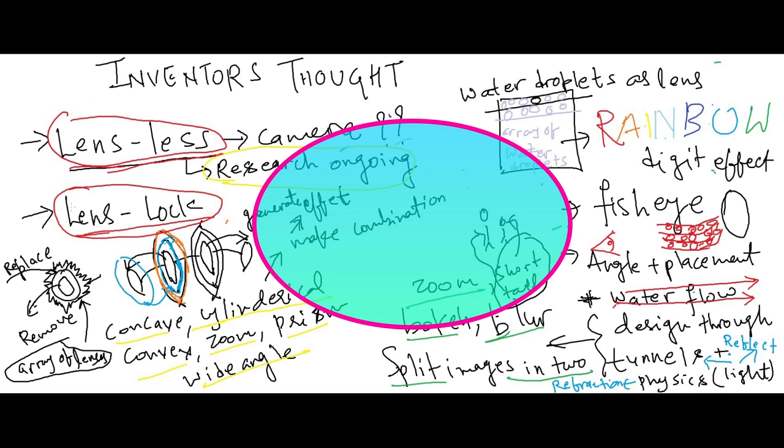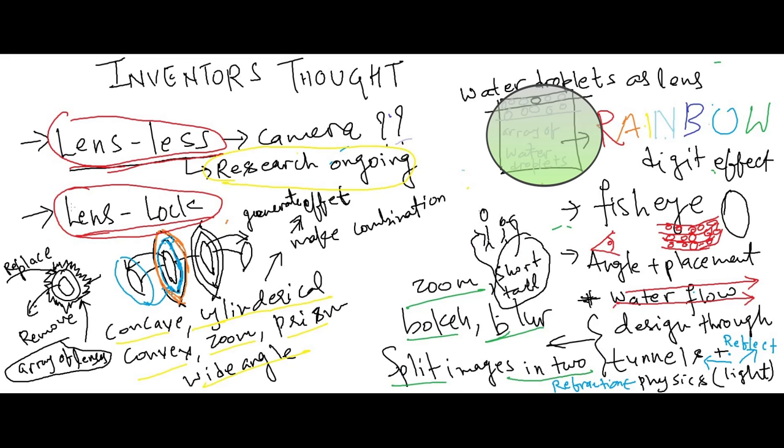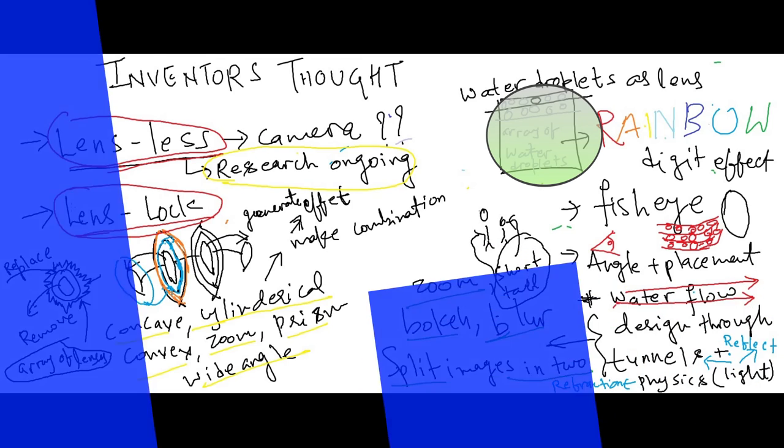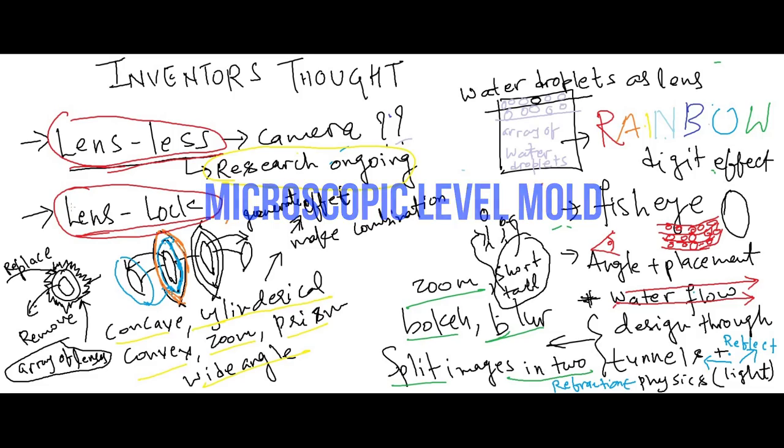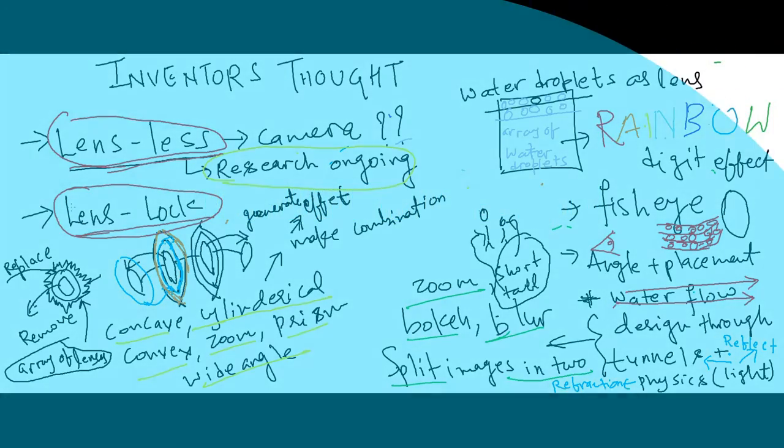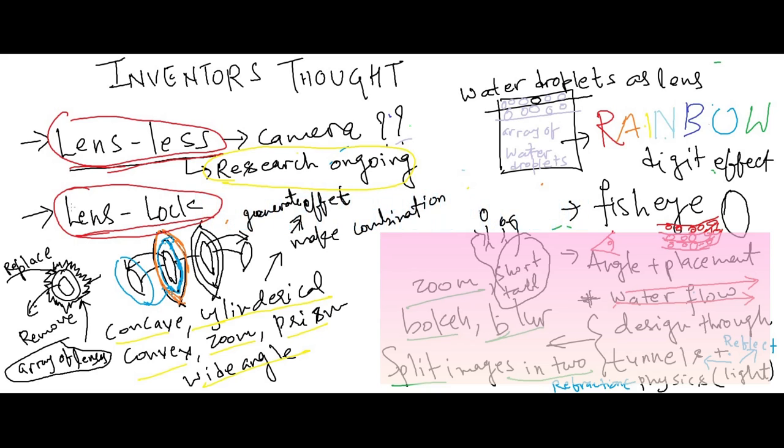For lensless design there must be cost-effective transparent material or a film which can produce similar digital effects. Replacement of lens has been done using water droplets, frozen in microscopic form in a mold. It could be arranged in experimental array to produce outstanding effects. So what about rainbow or magic mirror effects?